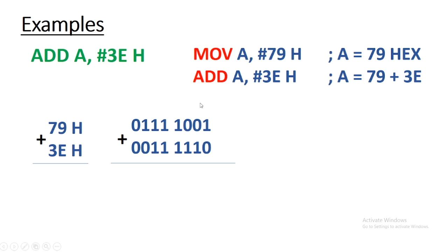We have a few examples. Suppose we want to add this immediate data into accumulator. There are two instructions. First instruction is moving 79H immediate data into accumulator. The pound sign or hash sign indicates that it's immediate data.